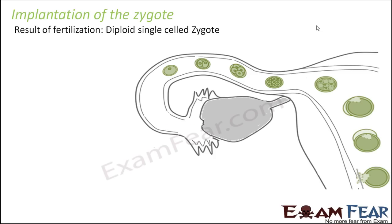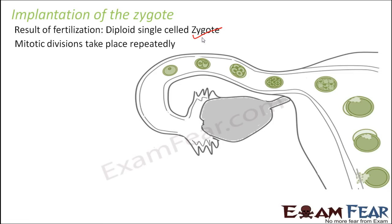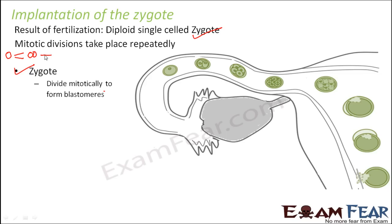As we saw, the result of fertilization is a single diploid zygote. Now mitotic divisions take place repeatedly. The zygote divides mitotically to form blastomeres. So the single cell undergoes mitotic division to form a two-cell structure, which further divides to form a four-cell structure, then an eight-cell structure. These multi-cell structures are known as blastomeres.